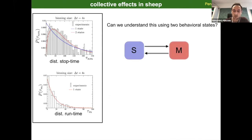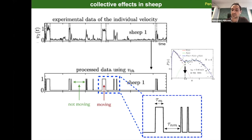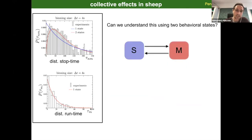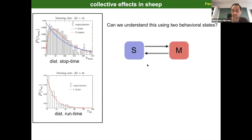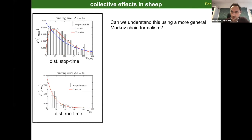We look at the distribution of times the individual is moving and the times it is not moving. The distribution of run times is log-linear and well-described by an exponential. But the distribution of stop times is not exponential — it has a gamma shape. Again, the same question: can we understand this using two behavioral states? The answer is no, because a two-state model also gives an exponential for the stop times.